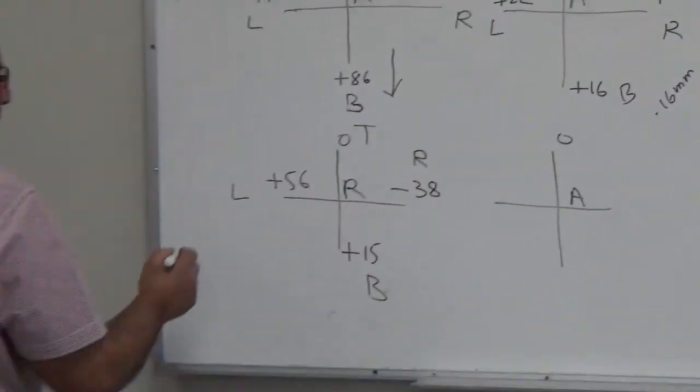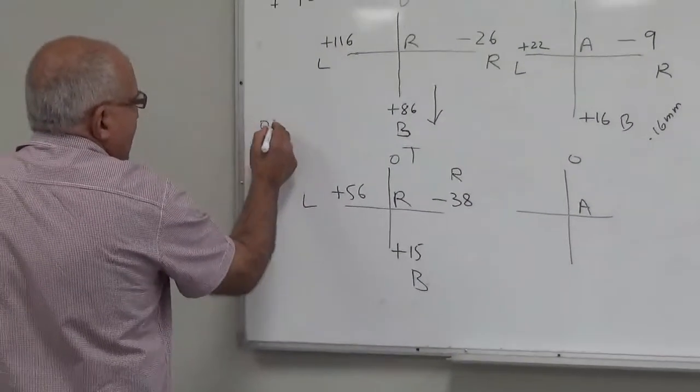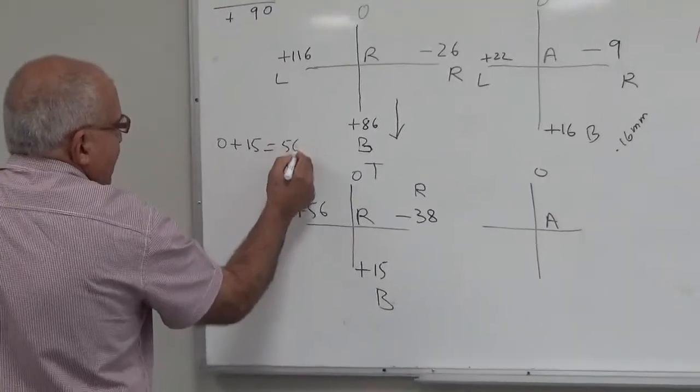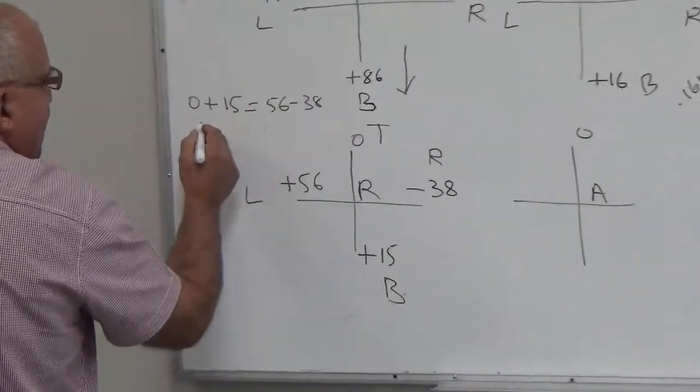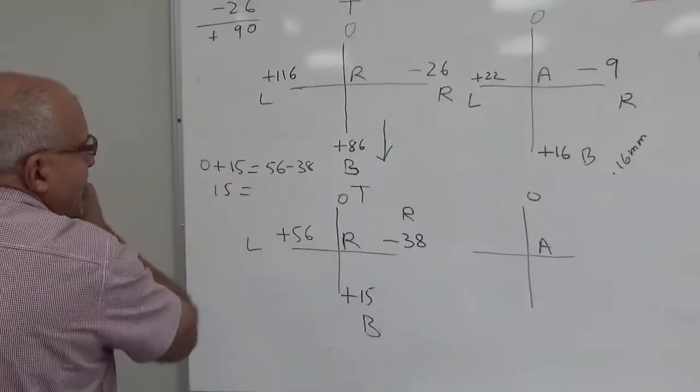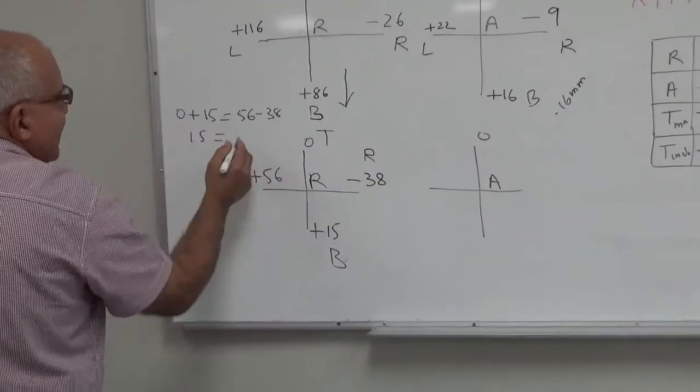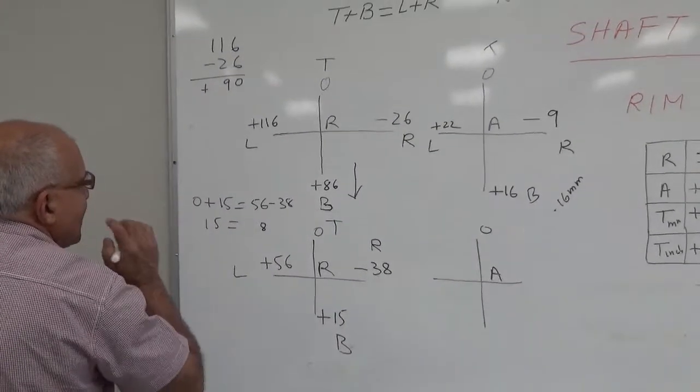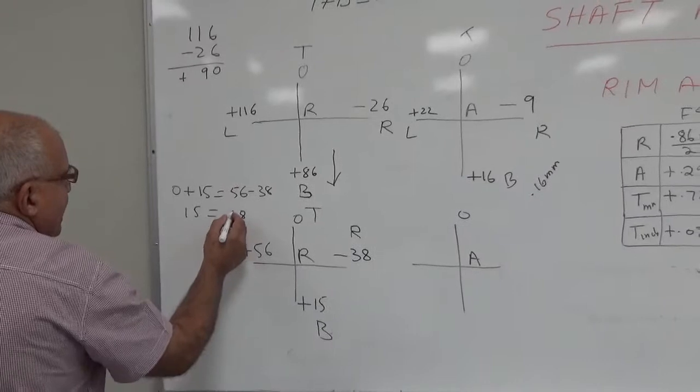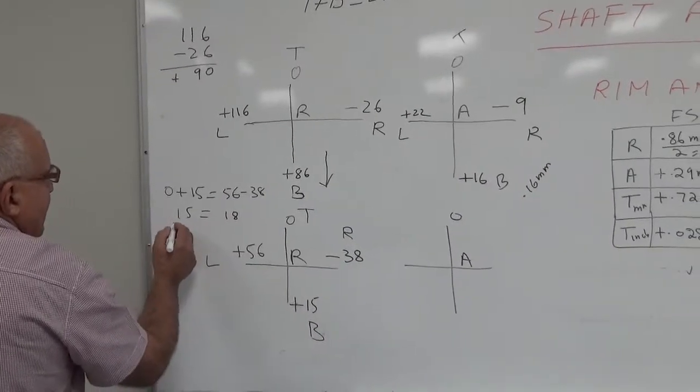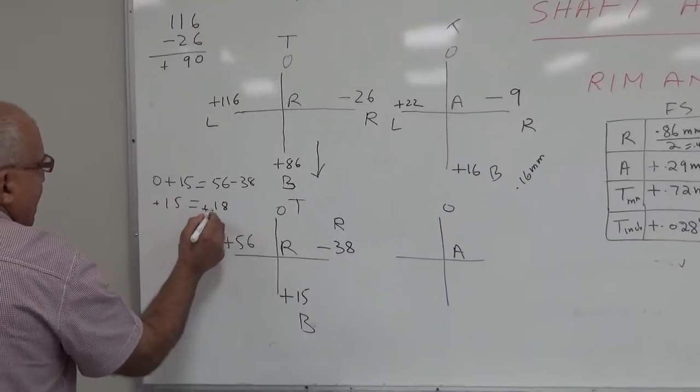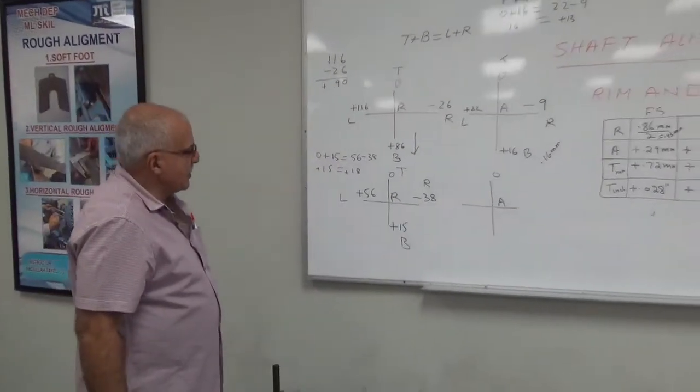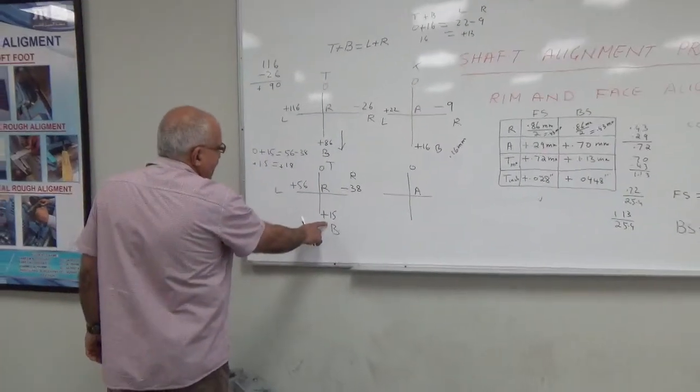Now zero plus 15 should be equal to 56 minus 38. So this is it. Okay, so they are almost equal so it means I have taken the reading correct.